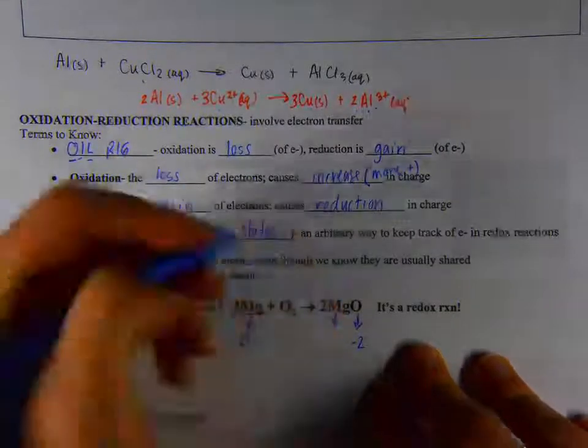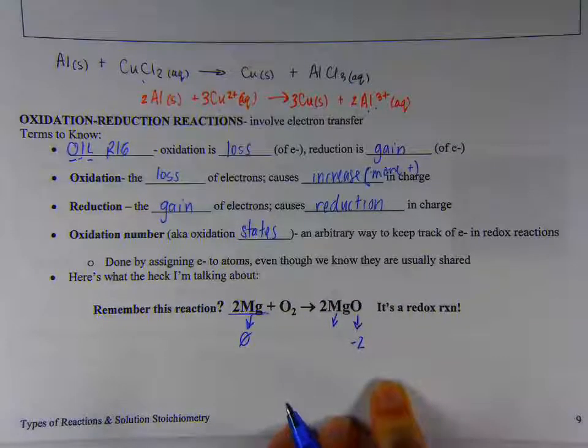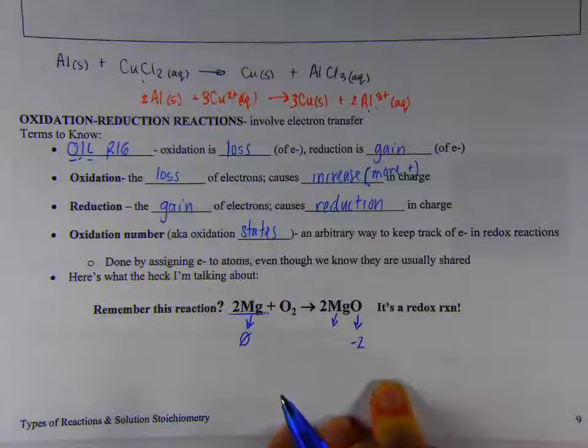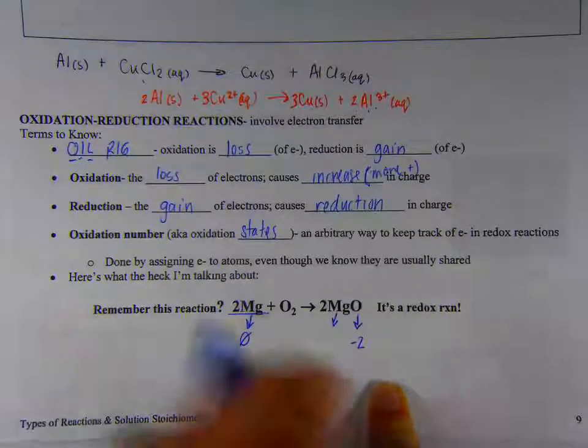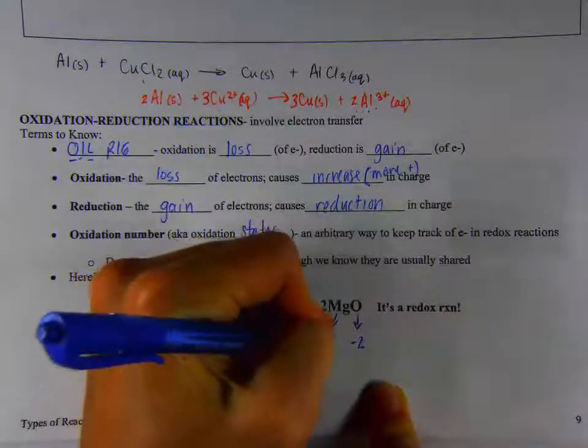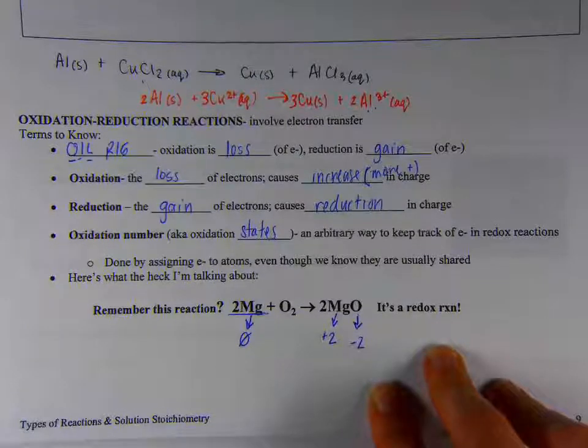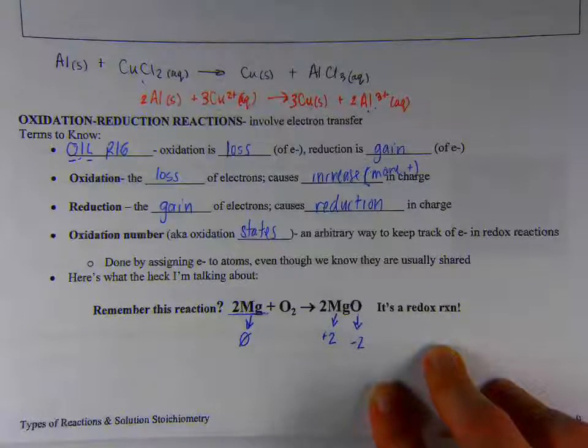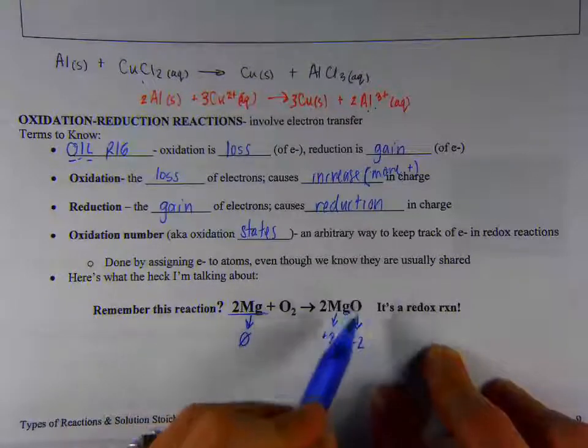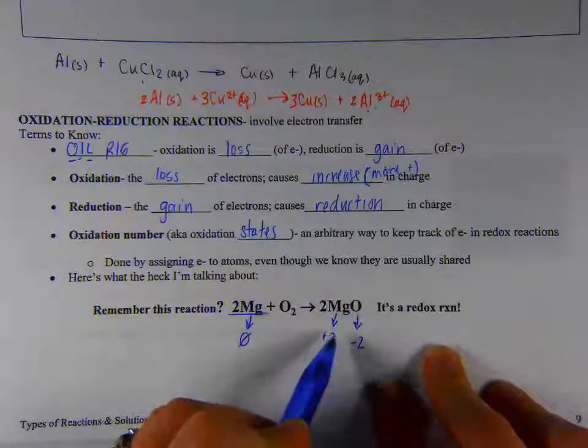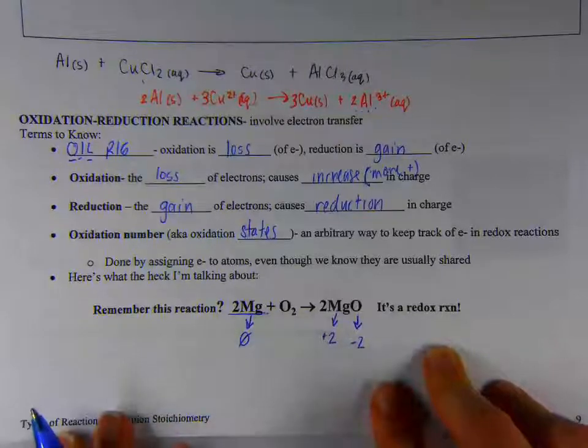Magnesium, if I asked you what charge it usually takes when it forms compounds, you'd probably say, looking at your periodic table, plus two, and that is its oxidation state here. Oxidation states are usually the charge that things take when they are in their ion forms. It doesn't mean that this magnesium has a positive two charge on it. It's just for tracking the electrons and where they go.